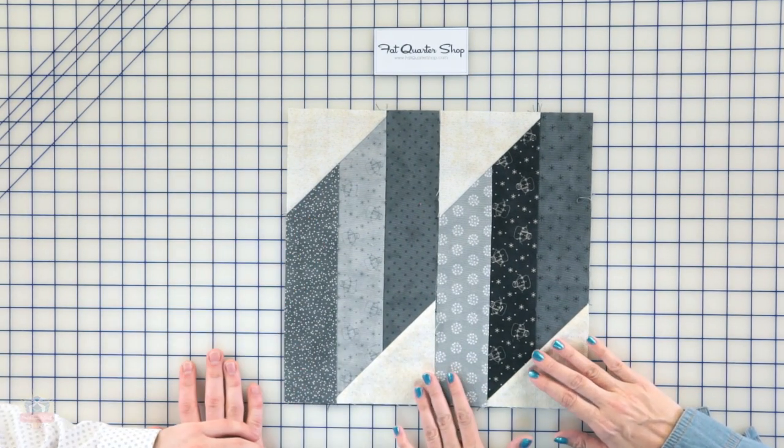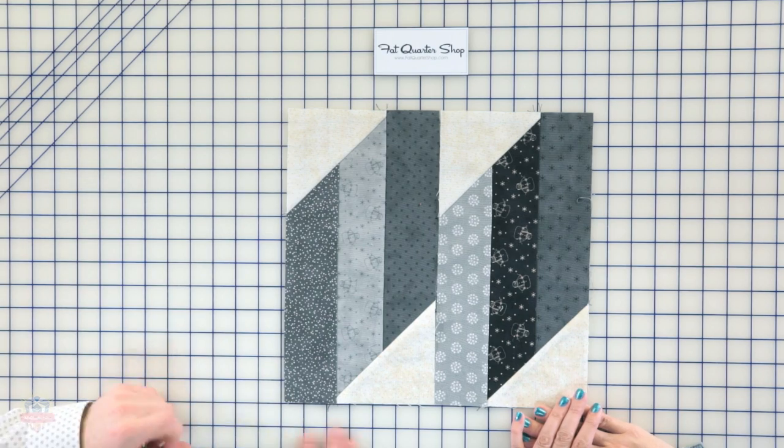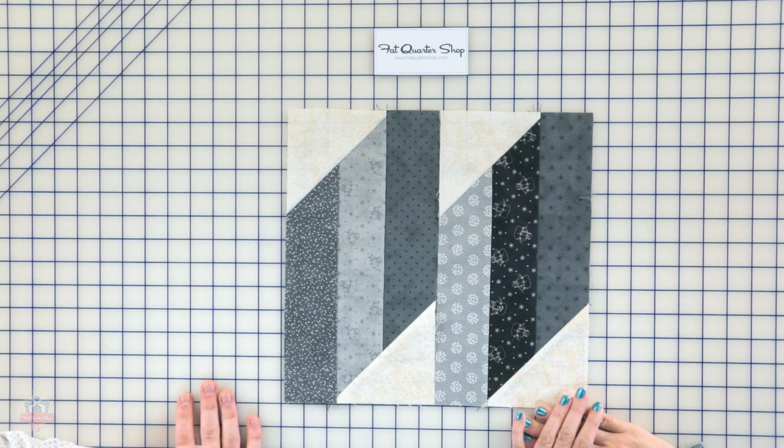And then you're gonna sew the blocks together to make a square. You're gonna sew the blocks five across, and then you're gonna have six rows of five.